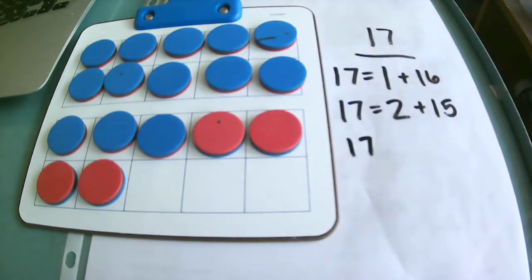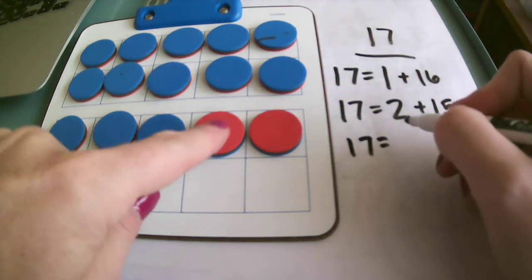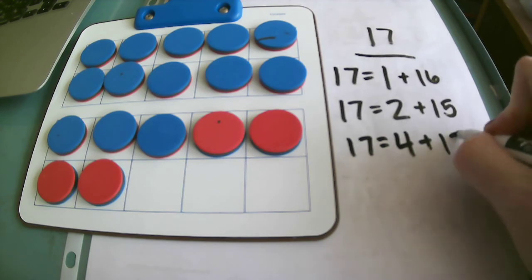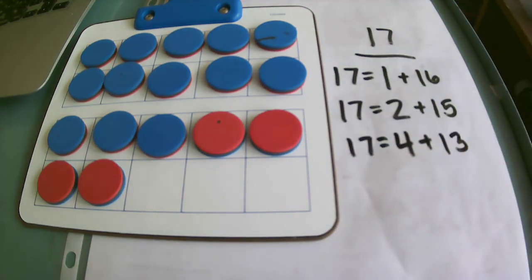Let's flip over 2 more this time. So this time I have 1, 2, 3, 4 reds, and I have 13 blues, which means that 4 and 13 give me 17.